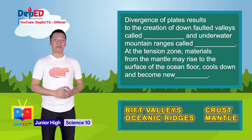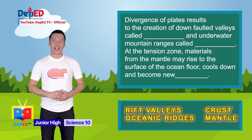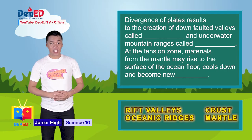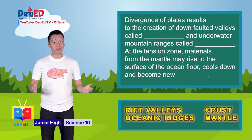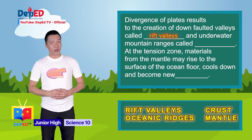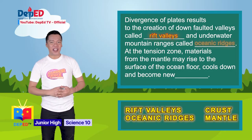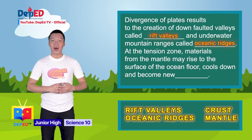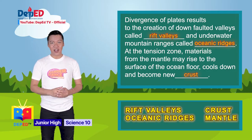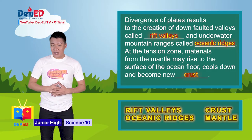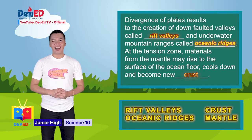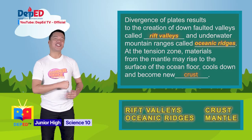Time is up. Let's check your answers. Divergence of plates results in the creation of down-faulted valleys called rift valleys and underwater mountain ranges called oceanic ridges. At the tension zone, materials from the mantle may rise to the surface of the ocean floor, cool down, and become new crust. Congratulations, Wonder Warriors! Good job!